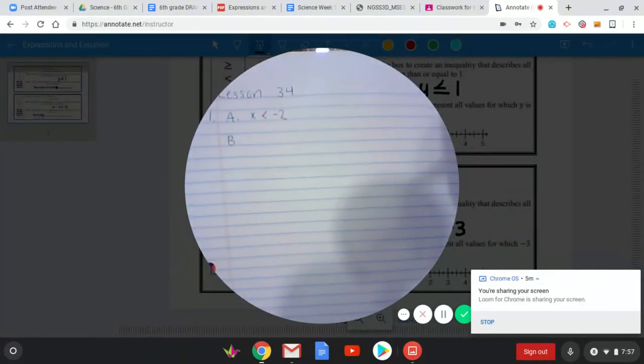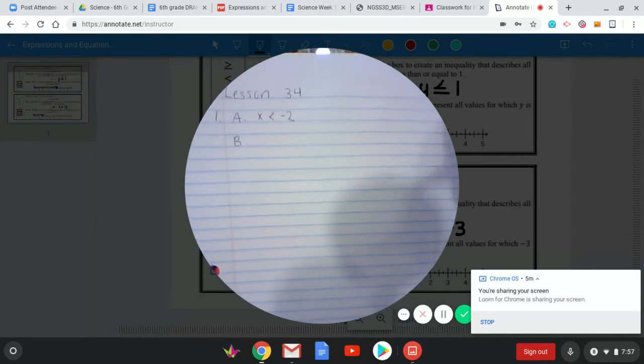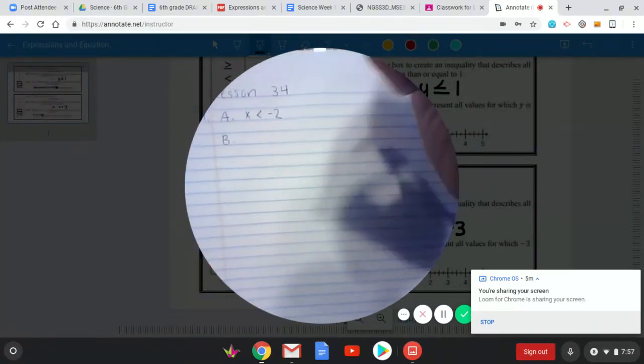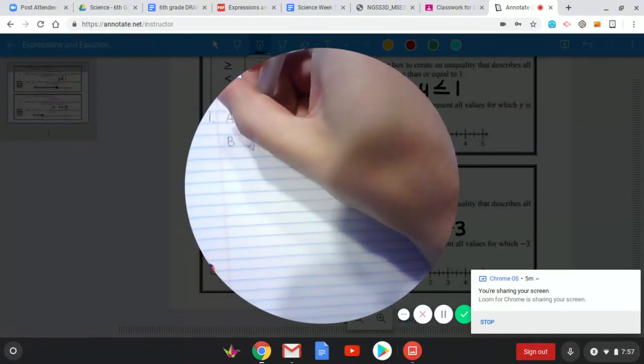And for your number line just follow whatever the number line is on the lesson as far as which numbers to put on it. So this one goes from negative five to five. So I'm going to go ahead and draw my number line.